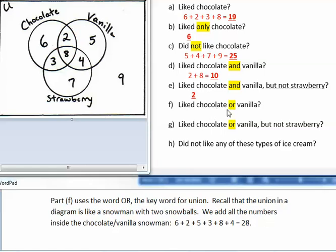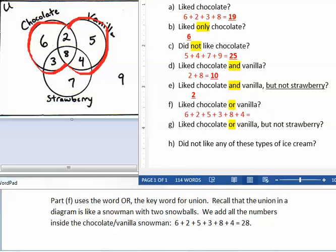Part F uses the word OR, the key word for union. Recall that the union in a diagram is like a snowman with two snowballs. We add all the numbers inside the chocolate and vanilla snowman. 6 plus 2 plus 5 plus 3 plus 8 plus 4, which equals 28.